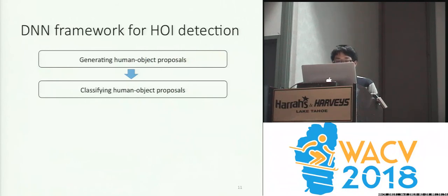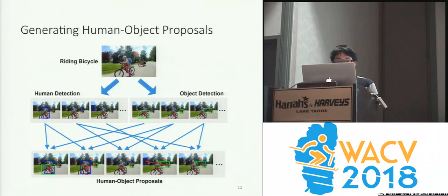To address HOI detection, we propose a novel DNN-based framework. Our approach produces detections in two stages. First, generating proposals, where each proposal is a human-object pair. And second, classifying each proposal by its interaction class. To generate proposals, we run state-of-the-art object detectors to detect humans and objects, and pair each detected human with each detected object to get one proposal.